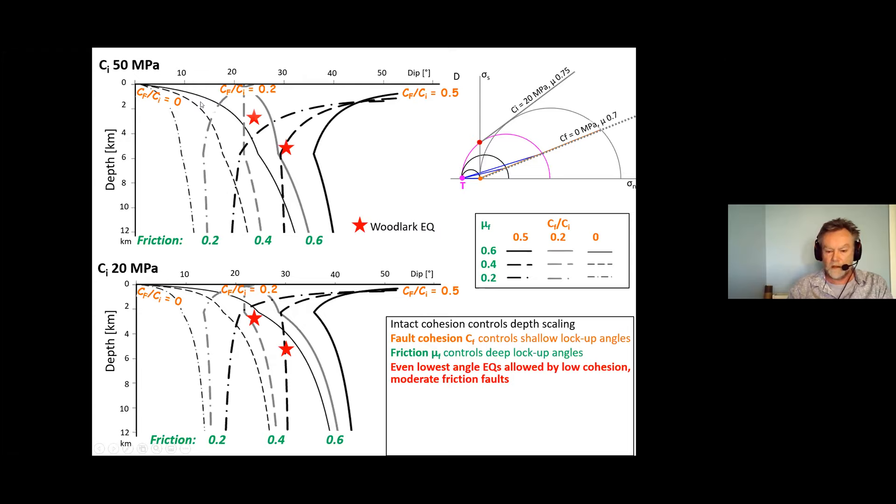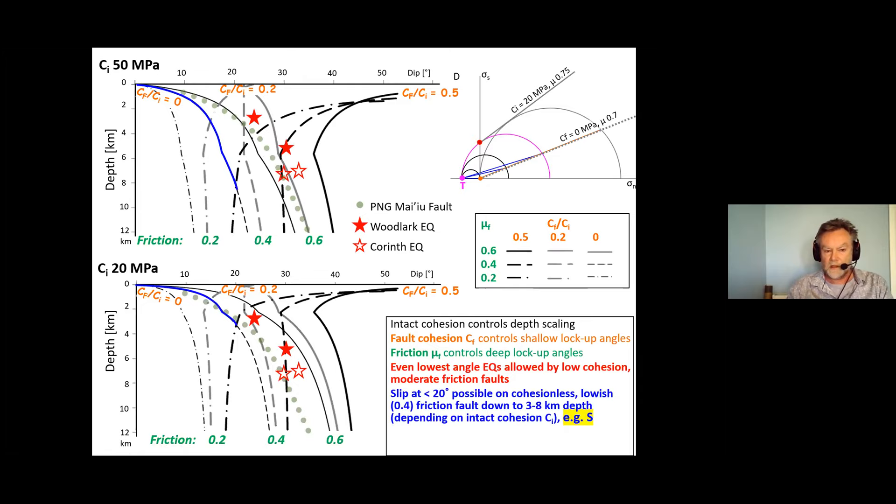And even the lowest angle earthquakes such as the Woodlark earthquakes here and here and the Corinth earthquakes here and here are allowed by low cohesion. Showing in green here is the Maui fault again showing how well that fits with a low cohesion moderate friction fault. It's allowed basically all the way up to the surface.